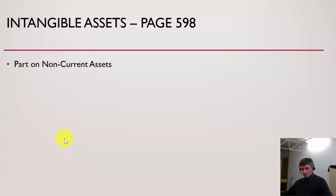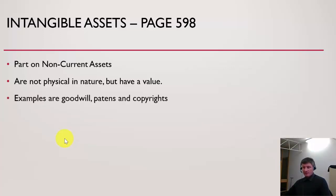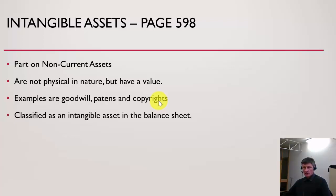Intangible assets are part of non-current assets — it's important to state that — and they appear in the intangible section of our balance sheet under non-current assets. They are not physical but have a value. Examples include goodwill, patents, and copyrights. These are things of value that the business has purchased or recognised at some point, which are then recorded as a non-current asset in the balance sheet.